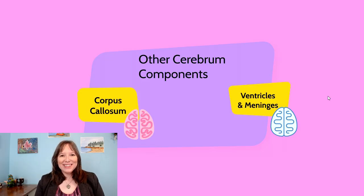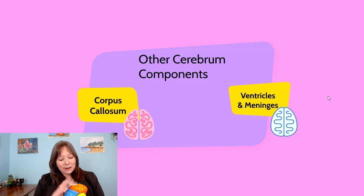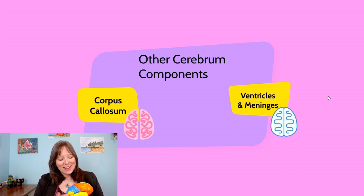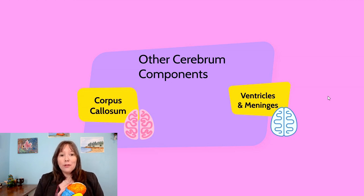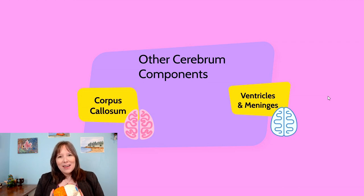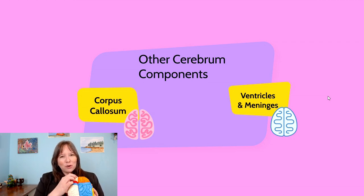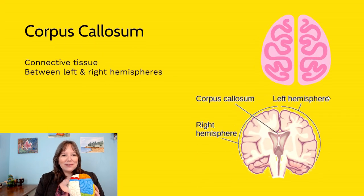Welcome back. We're still talking about the brain. Last time we talked about the cerebrum and the main four lobes — the frontal, temporal, parietal, and occipital lobes. Now we're going to talk about other cerebrum components. This section is more brief, but one of the areas we have to talk about is the corpus callosum.